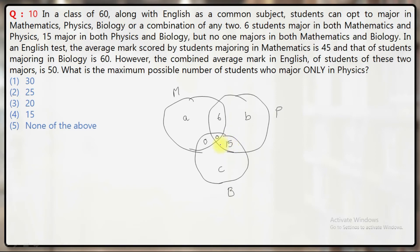All students take English as a common subject. Total number of students is 60. So a plus b plus c plus 6 plus 15 must equal 60. Therefore, a plus b plus c equals 60 minus 21, which is 39. This is the sum of all three variables.